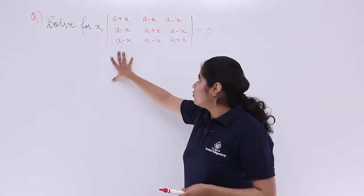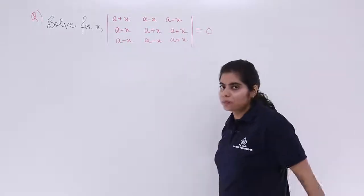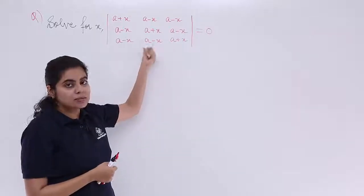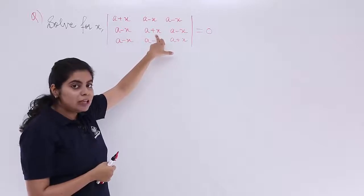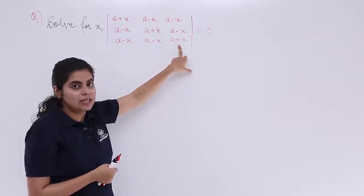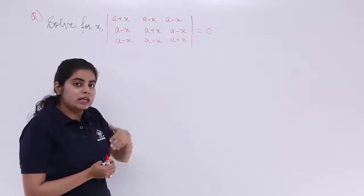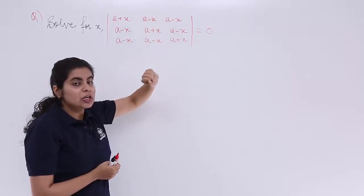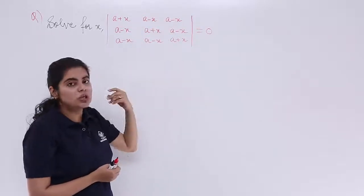The question says: solve for x, and this determinant is given as equal to 0. Observe this question carefully — it's all in terms of a and x. The diagonal elements are all (a + x), and the rest are all (a − x). Now if you observe carefully, if you add all the columns, you get a common element which can be taken out as common from the determinant.